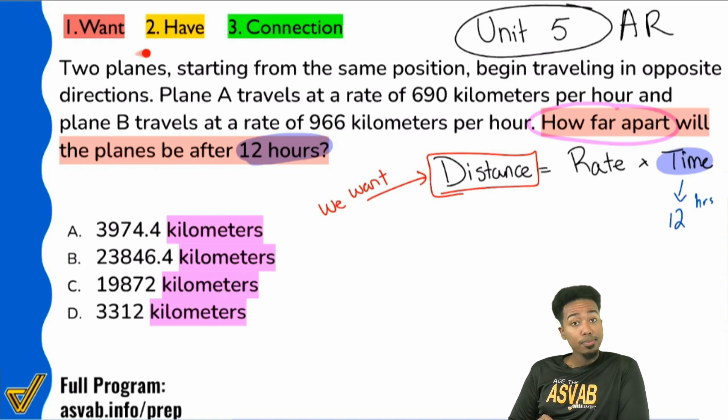So two planes starting from the same position begin traveling in opposite directions. Sounds good. So we have starting from the same position begin traveling in opposite directions. Most people just kind of overlook that. We'll keep reading. Plane A travels at a rate of 690 kilometers per hour and plane B travels at a rate of 966 kilometers per hour. What is the problem there?